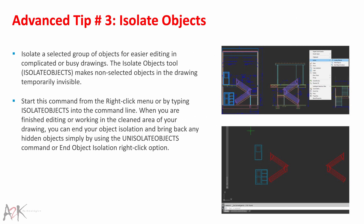Advanced Tip 3 – Isolate Objects. Isolate a selected group of objects for easy editing in complicated or busy drawings. The Isolate Objects tool makes non-selected objects in the drawing temporarily invisible. Start this command from the right-click menu or by typing 'Isolate Objects' in the command line. When you've finished editing, you can end object isolation and bring back any hidden objects using the Isolate Objects command or the object isolation right-click option.